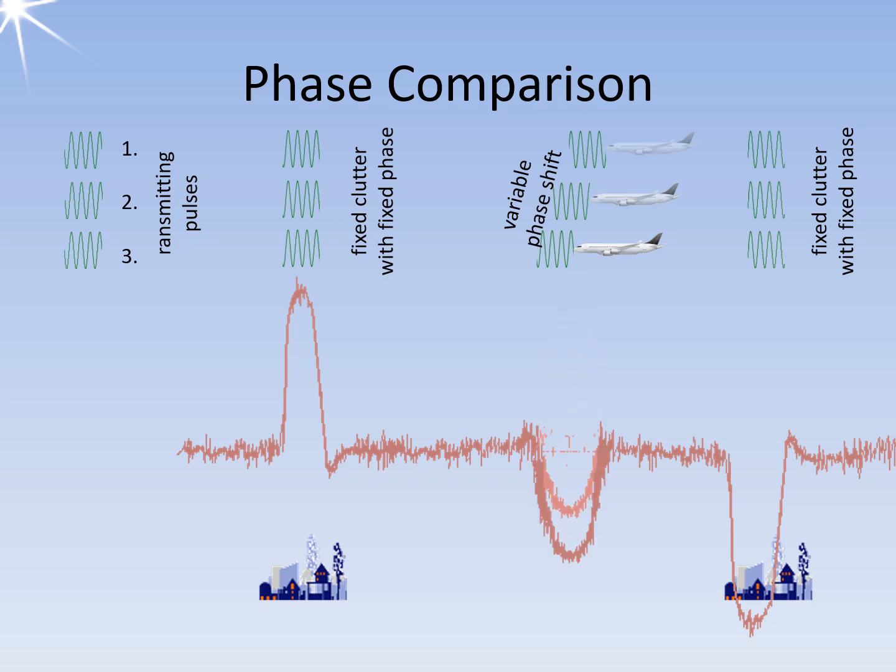In the case of a moving target, the phase angle changes from transmitting pulse to transmitting pulse. With constant phase change, a bipolar video pulse is produced after the phase detector. The larger the Doppler frequency, the faster this pulse changes polarity.